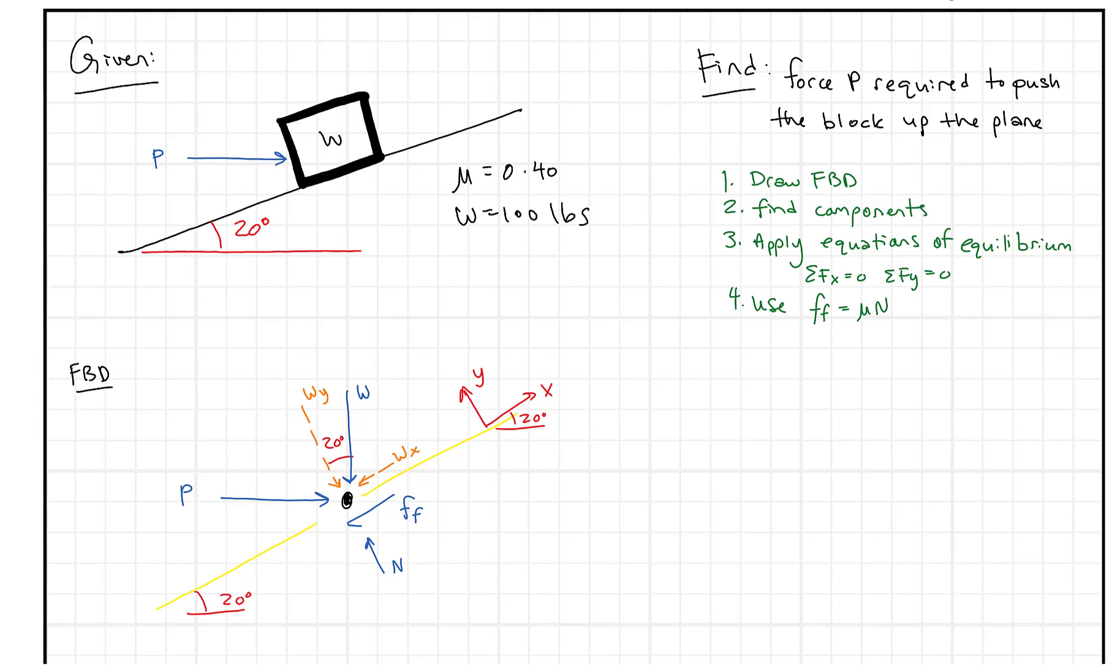Alright, so this is the second part in a two-part series on friction. And in the first part, what we did is we essentially had a force P that was parallel to this surface here. Well, now all I've done is I've taken that force P and put it horizontal to the horizontal surface. So now, this makes the problem a little bit different.